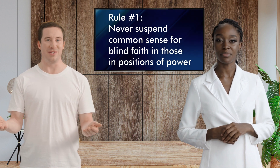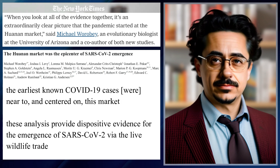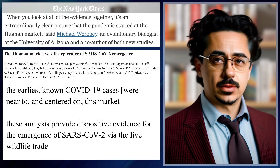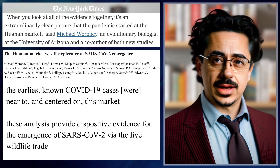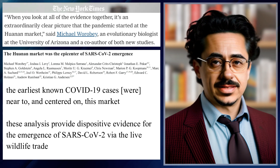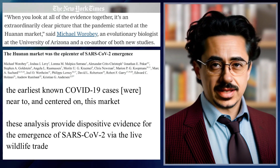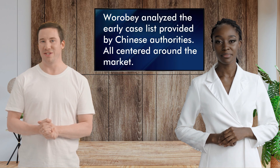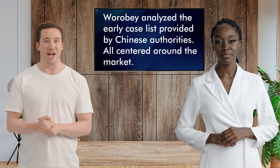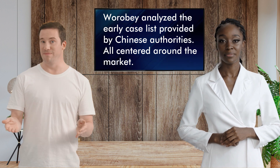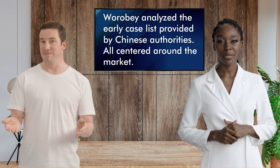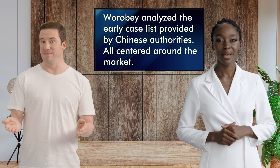ChatGPT, why did scientists say it was impossible that it came from that lab? Michael Worobey led an analysis of early COVID cases provided by the Chinese authorities, which largely centred around the Huanan market. Worobey claims his paper provides dispositive evidence that the virus originated in the market. But that list came from the same Chinese government accused of making the virus in the lab and trying to hide it. Yes Larry. Early COVID cases China provided were all centred around the market and not the lab.